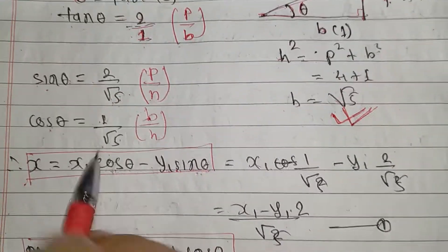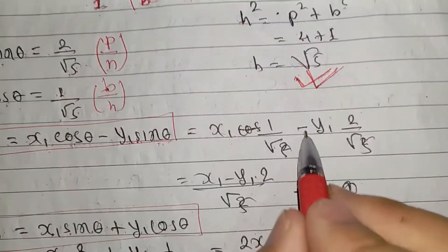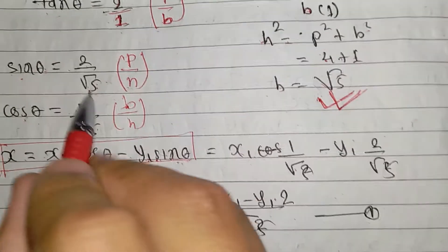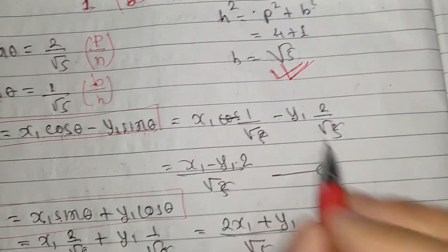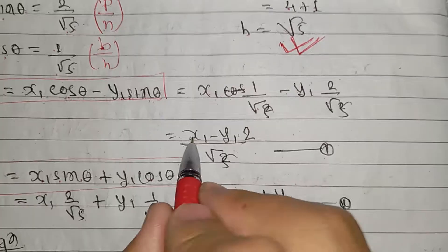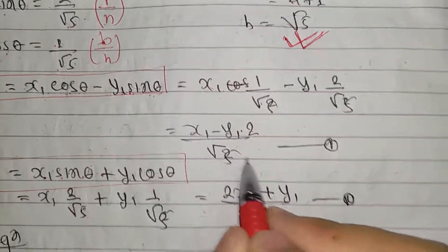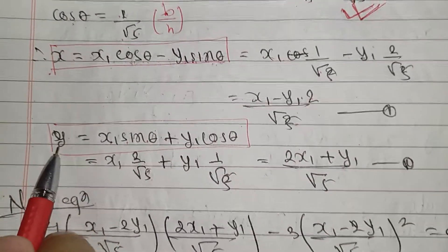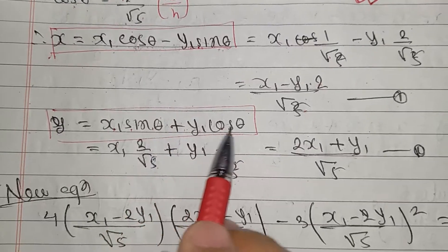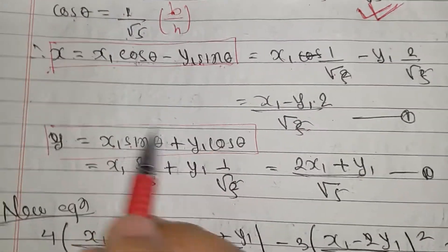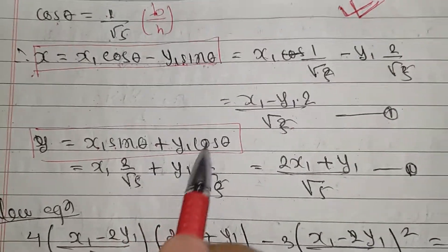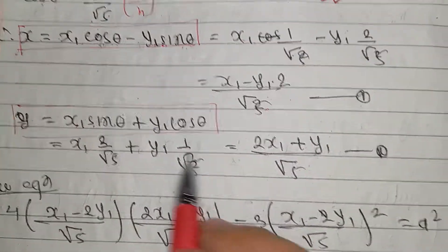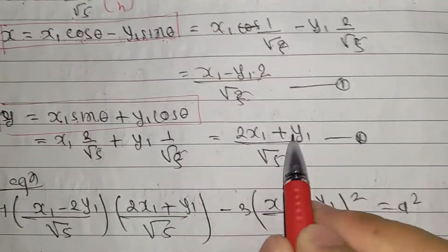Sin equals 2 by root 5, cos equals 1 by root 5. Substituting: x1 equals (x1 minus 2y1) upon root 5, y equals (2x1 plus y1) upon root 5.